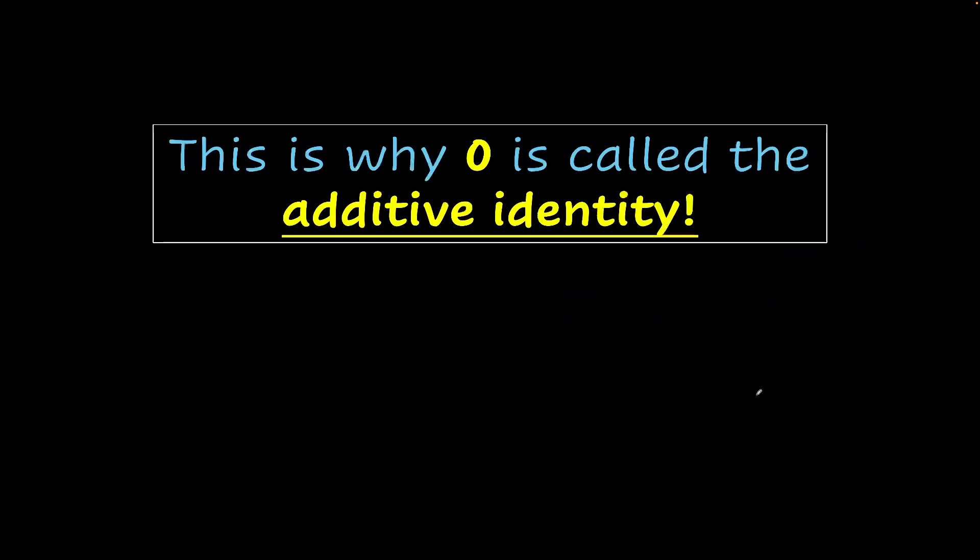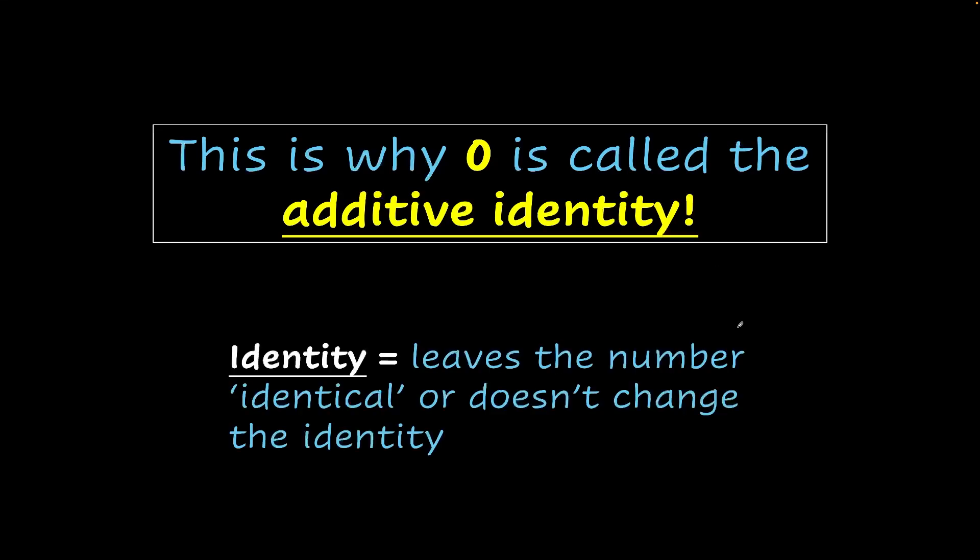This is why 0 is called the additive identity. The word identity might be confusing. It basically means that it leaves the number identical. It doesn't change its identity.